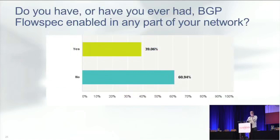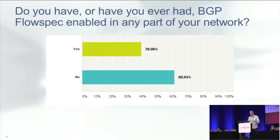The first survey question was: do you have or have you ever enabled BGP flow spec in any part of your network? The majority — almost 61% — haven't tried it. That really comes back to why I wanted to come talk about this today. I want to raise awareness and make a call to action to the community. If you've got a lab, try it there. Maybe put it in a sanitized area of the network where if something went wrong it wouldn't have a huge impact. Kick the tires, let your vendors know what's working and what isn't. The more we talk about it and try it, the better this is going to get over time.